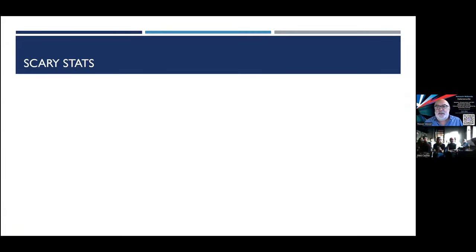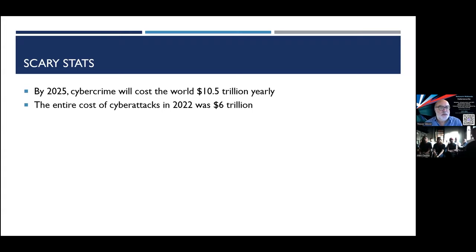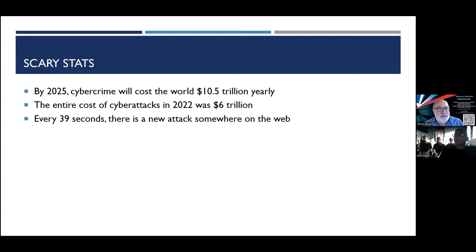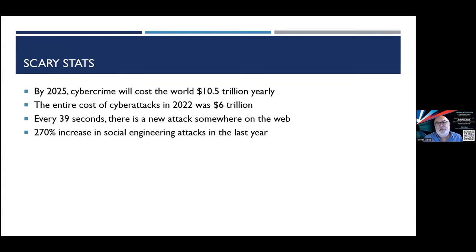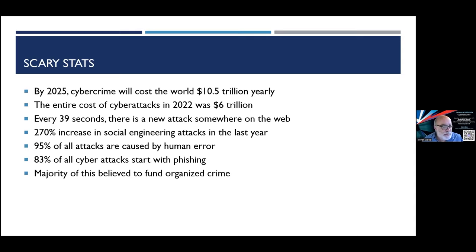By 2025, it's estimated that cybercrime will cost the world 10.5 trillion dollars every year. In 2022, the cost was 6 trillion dollars. Every 39 seconds there's a new attack somewhere on the web. Last year there was a 270% increase in social engineering attacks. 95% of all attacks are caused by human error, and 83% of all cyber attacks start with phishing.